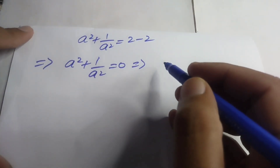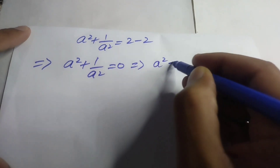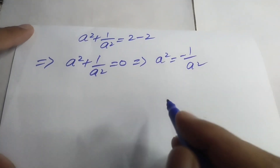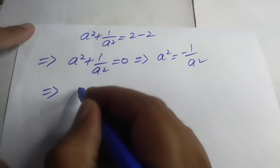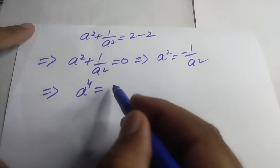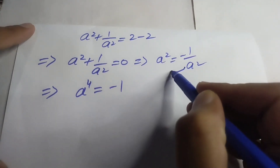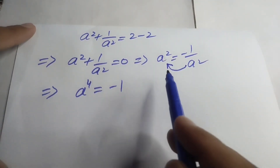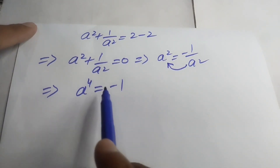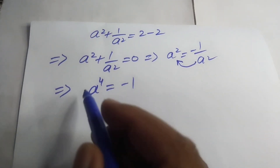After that we get a² + 1/a² = 0. If we simplify this a little bit, we obtain a² = −1/a². After that we get a⁴ = −1. We know that a² is divided on the right hand side, and when we take it to the left hand side it is multiplied by a², so we obtain a⁴ = −1.